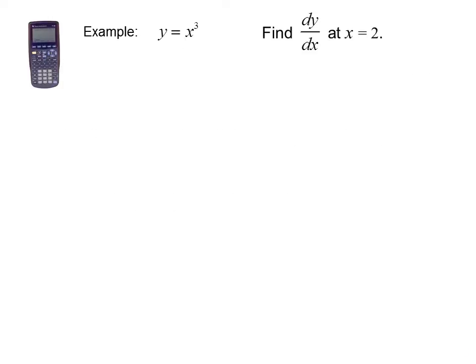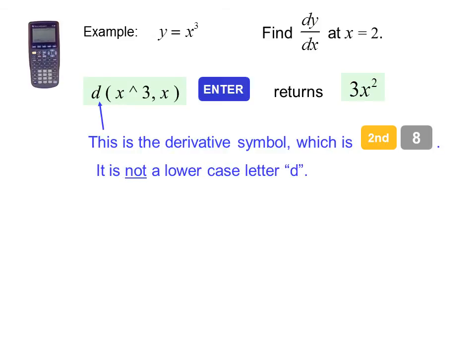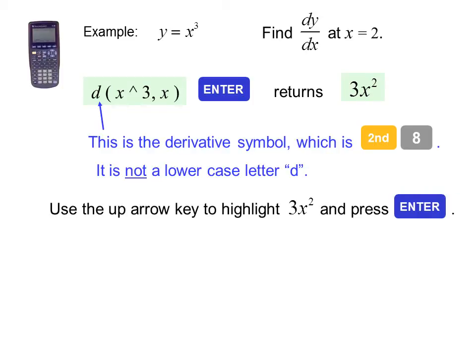Example: y = x³. Find dy/dx at x = 2. We enter d(x³, x) and the calculator returns 3x². This is the derivative symbol, which is second-8; it is not a lowercase d. Now use the up arrow key to highlight 3x² and press enter. That makes another copy. Then we add the vertical bar and x = 2, press enter, and the calculator returns 12.